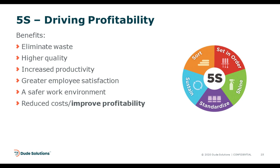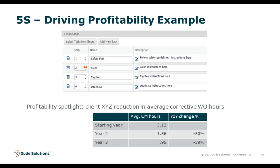5S can help drive profitability: it eliminates waste, produces higher quality output, increases productivity, improves employee satisfaction, and creates a safer work environment — all reducing costs and driving profitability. CMMS software can help you in this process by providing cleaning instructions and more. For example, one of our clients reduced the time spent on every corrective maintenance work order from over three hours in year one, to just under two hours by year two, and to clearly under one hour by year three — massive reductions that translate directly into profitability.